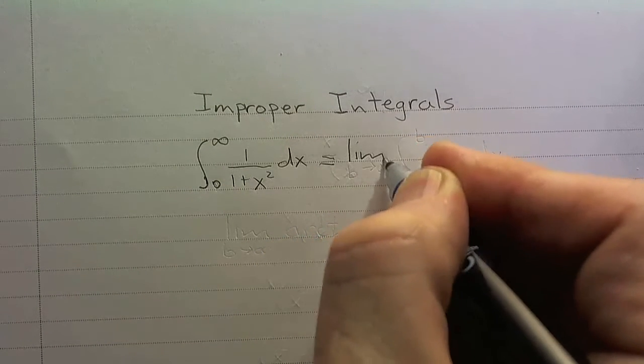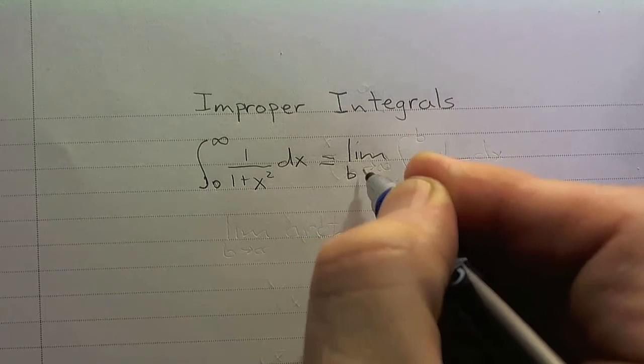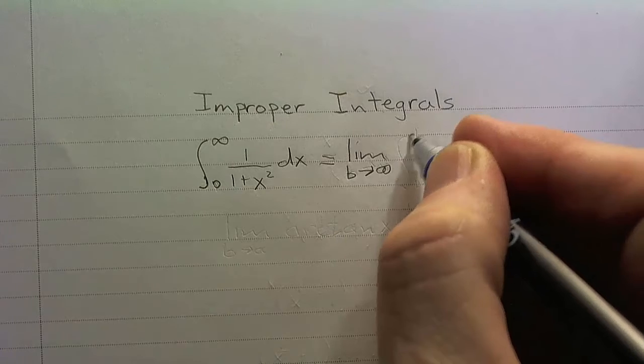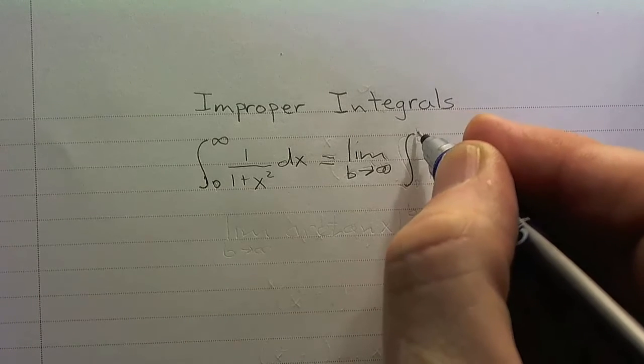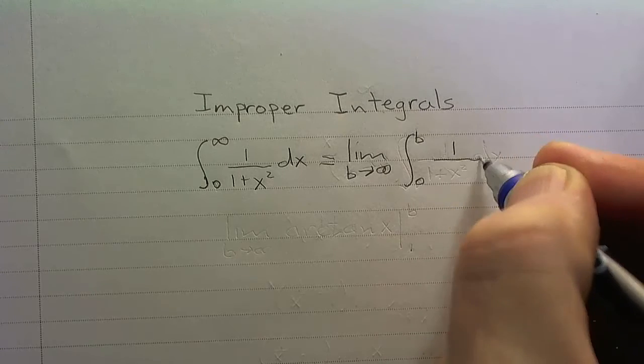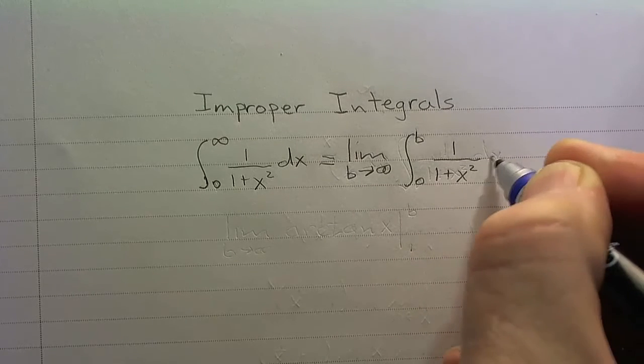We would change it to a limit. So I'm going to use b here. I'm going to say, well, let b go to infinity, and I'm going to replace infinity with b. And I've got 1 over 1 plus x squared dx.